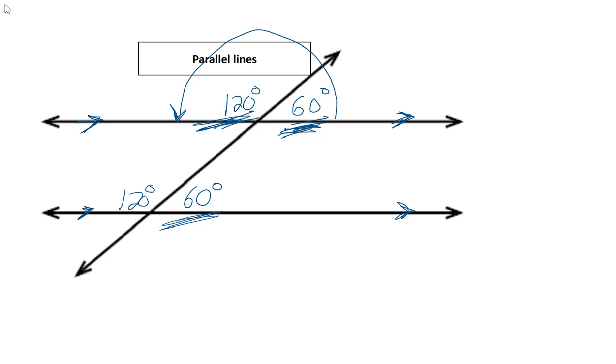We said 120 up here. Well, then this angle opposite that angle would also be 120. And we said 60 up here. Well, then this angle over here, opposite it, would be 60. All right, let's add some other important information.